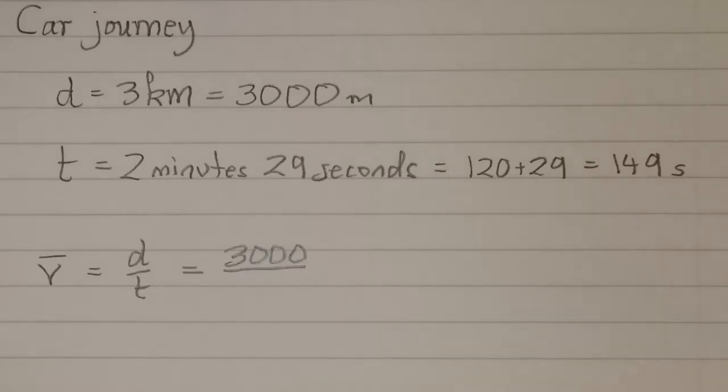V-bar, the average velocity, is equal to the distance travelled divided by the time taken. And substituting in the values, that gives us 3,000 divided by 149, which is 20.13 metres per second.